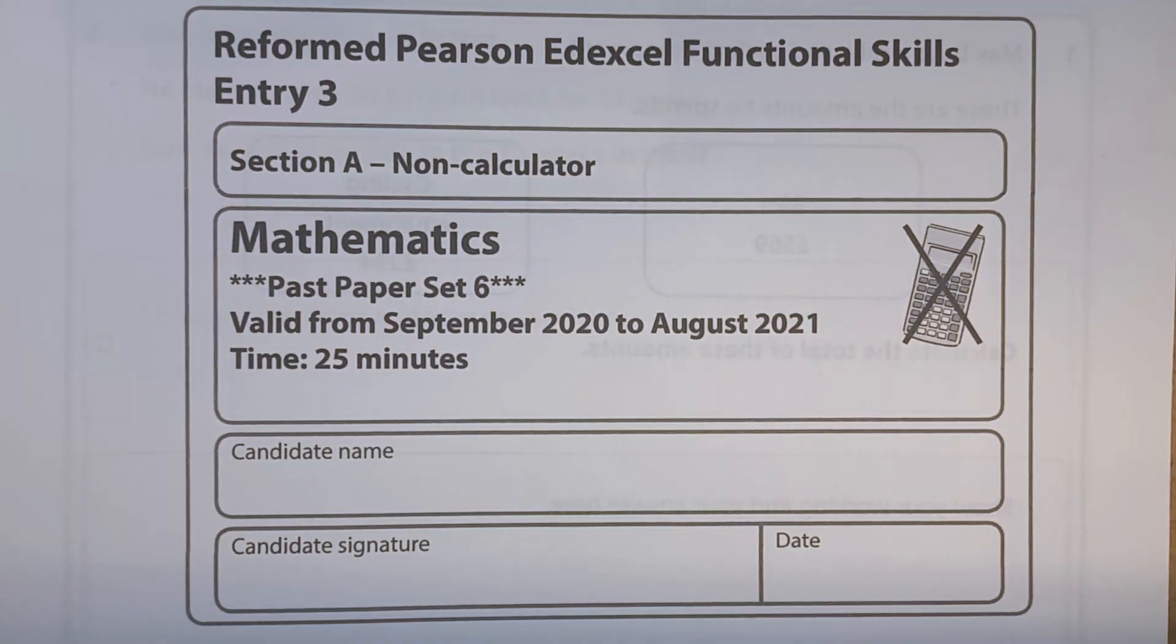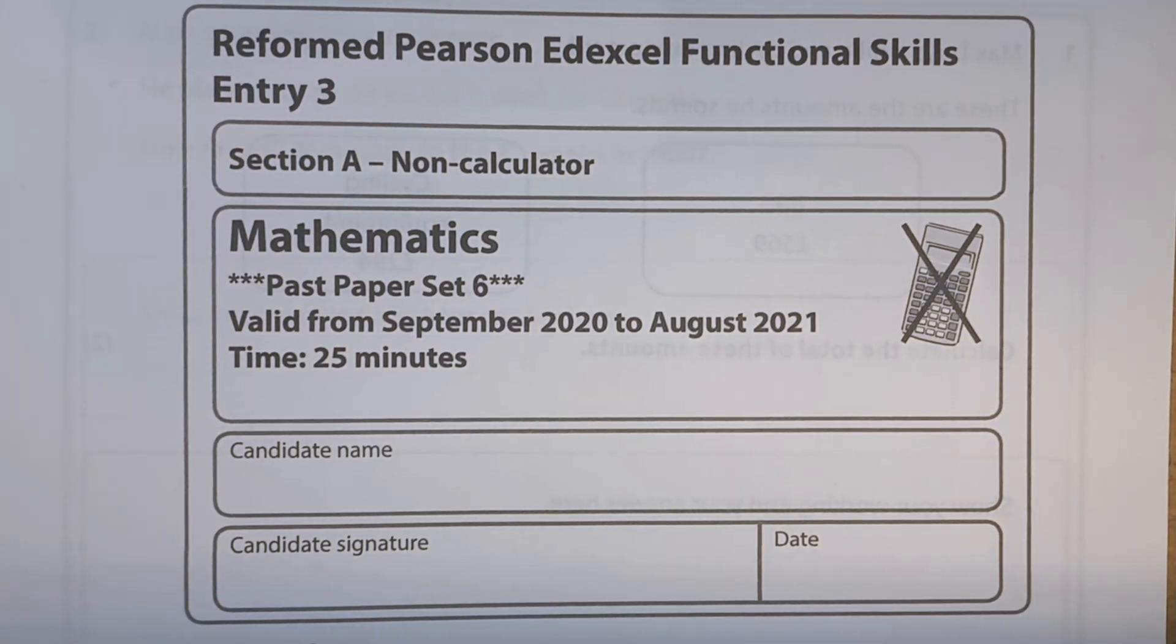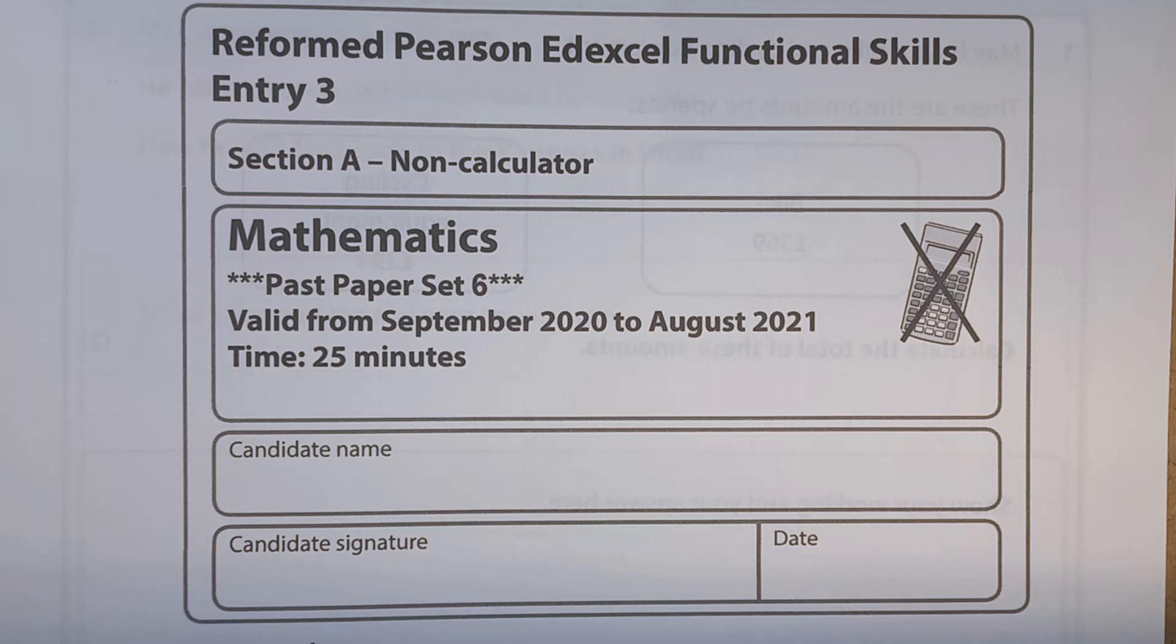Hi, today we're looking at Functional Skills Maths Entry Level 3. We've got the Pearson Edexcel exam board. This is past paper set 6 and we're going to start with the non-calculator section.